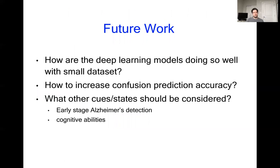Moving on to future work. The first thing we wanted to look at was how our model is doing so well despite our small data set. This tells us there's a strong predictor of confusion within these data items. What we want to find out is exactly what this is that's allowing such good results to be obtained. The other thing we're looking at is how to increase confusion prediction accuracy by using tweaks to our architecture, such as dilated convolutions in the CNN. Finally, we're looking at what other cues and states should be considered. We have ongoing work where we're using VT net to predict early stage Alzheimer's, as well as cognitive abilities such as visual literacy.